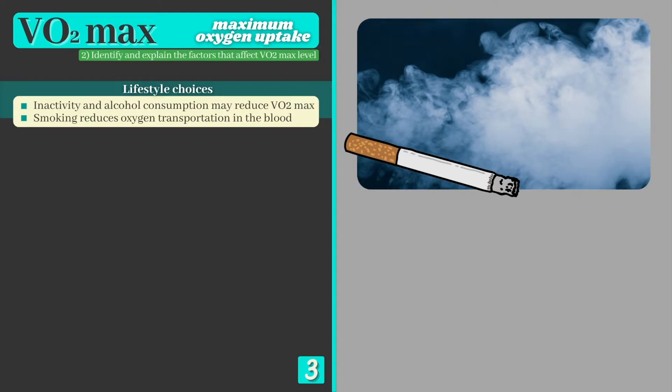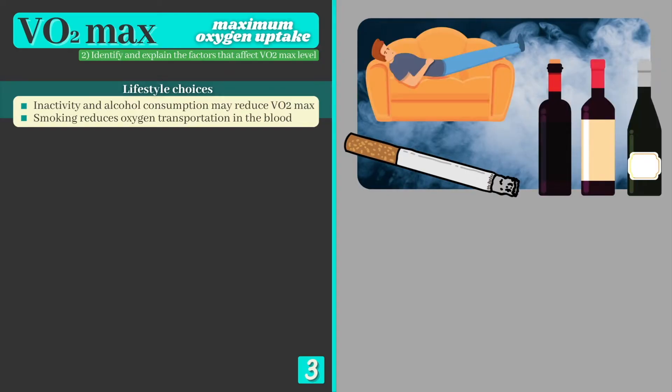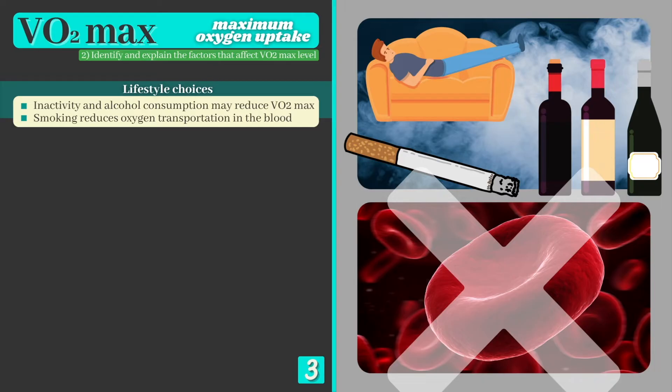Our second learning objective requires you to explain the five factors that affect your VO2 max level. Number one: poor lifestyle choices such as smoking, alcohol consumption, or living a sedentary or inactive lifestyle all have a negative impact on VO2 max. Smoking actually reduces the amount of oxygen that can be taken up by the haemoglobin in our red blood cells, limiting our ability to transport oxygen throughout the body.